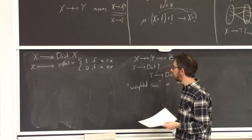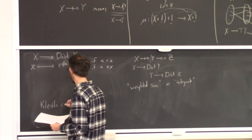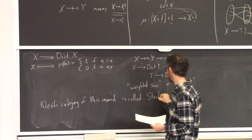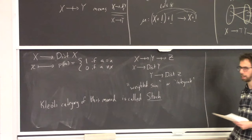The Kleisli category of this probability distribution monad is called Stoch, for stochastic maps — the category of sets and stochastic maps. There is a lot of work right now in applied category theory on various ways of understanding probability theory in terms of categorical axioms using commutative diagrams or string diagrams.